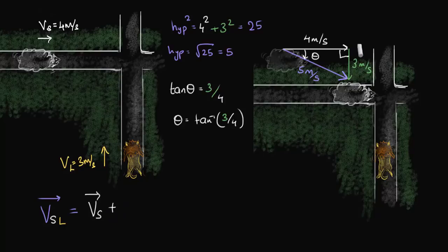What is this green one? That's the negative of this vector, right? I mean, since the lion is going upwards 3 meters per second, that's the reason the ground goes backwards 3 meters per second from the lion's point of view, right?